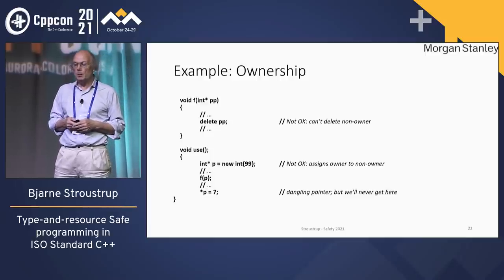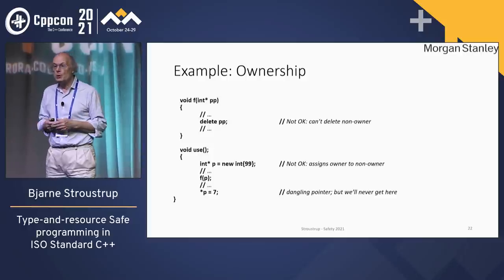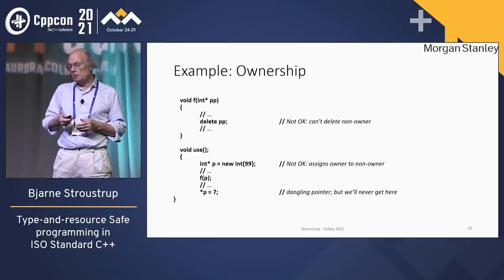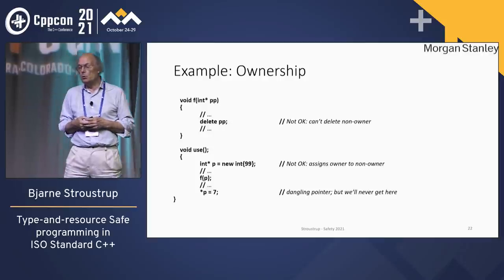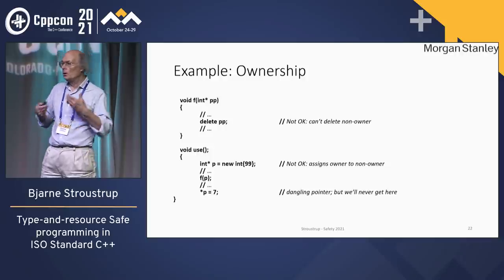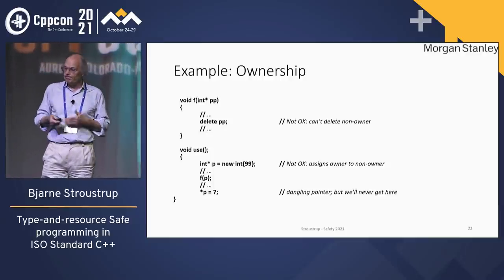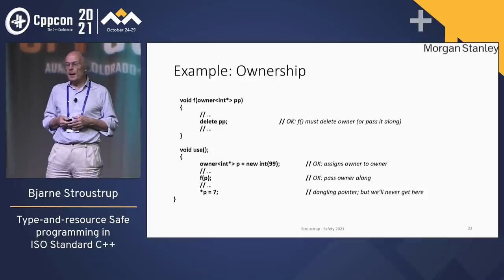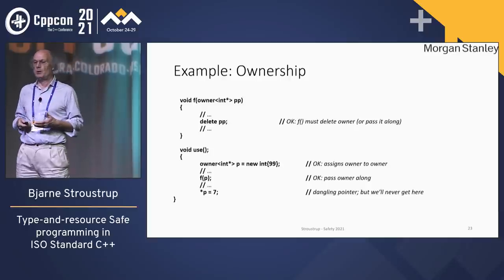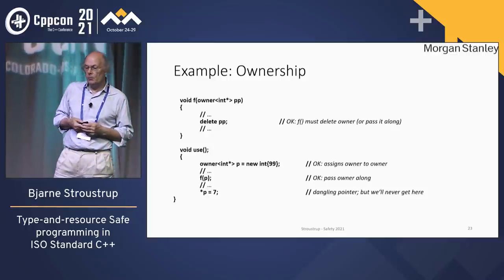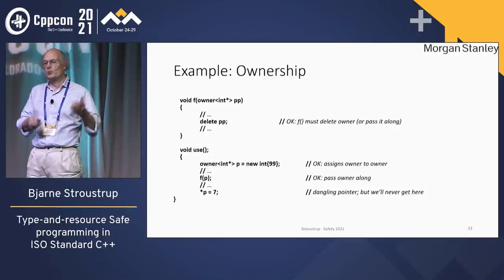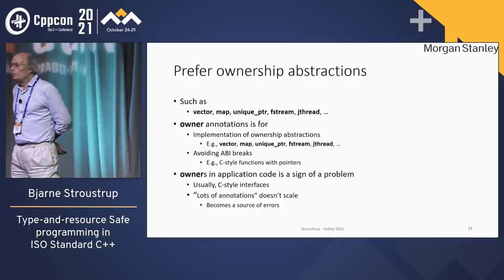Back to the nightmare example: I'm trying to delete PP in F — F isn't an owner, therefore it cannot be done. Similarly, in the use example, the new integer is assigned to a non-owner, so it doesn't have an owner. Then you have leaked it — that's not allowed, so that gets caught. You can add ownership to the handling. Now F is an owner, therefore it must delete. Down in use, if I tried to delete, that would be caught as an error because I'm handing the ownership over to somebody else. This gets messy — anything that involves a lot of annotations and careful attention across scopes is error-prone.